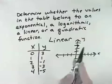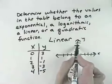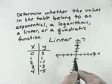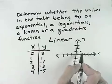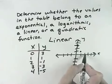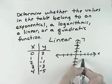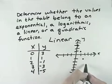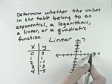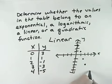Our first point is x equals 0, y equals 3. Then we have x equals 1, y equals 1. x equals 2, y equals negative 1. x equals 3, y equals negative 3. And finally, x equals 4, y equals negative 5.